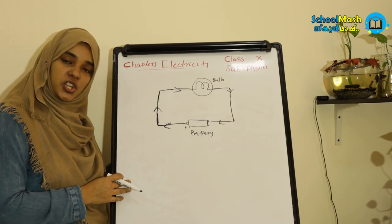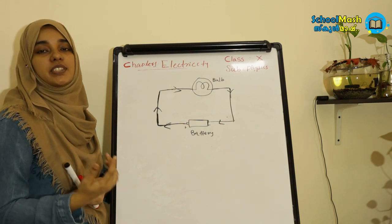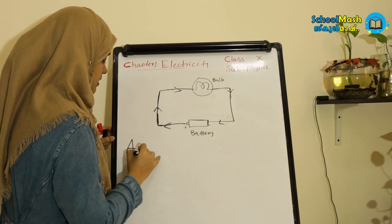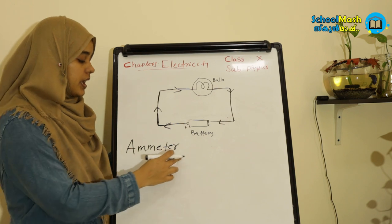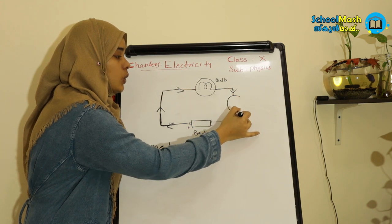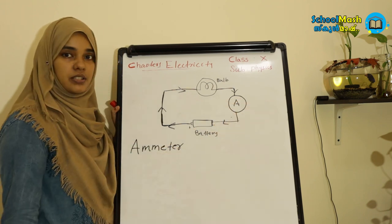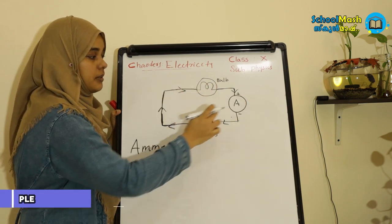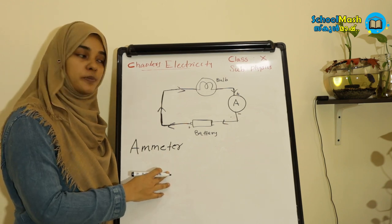Where do we measure the current? We measure the current using an instrument called an ammeter. To measure the current in a circuit, we include the ammeter in series connection. We represent it with the symbol A, connecting positive terminal to positive and negative terminal to negative.